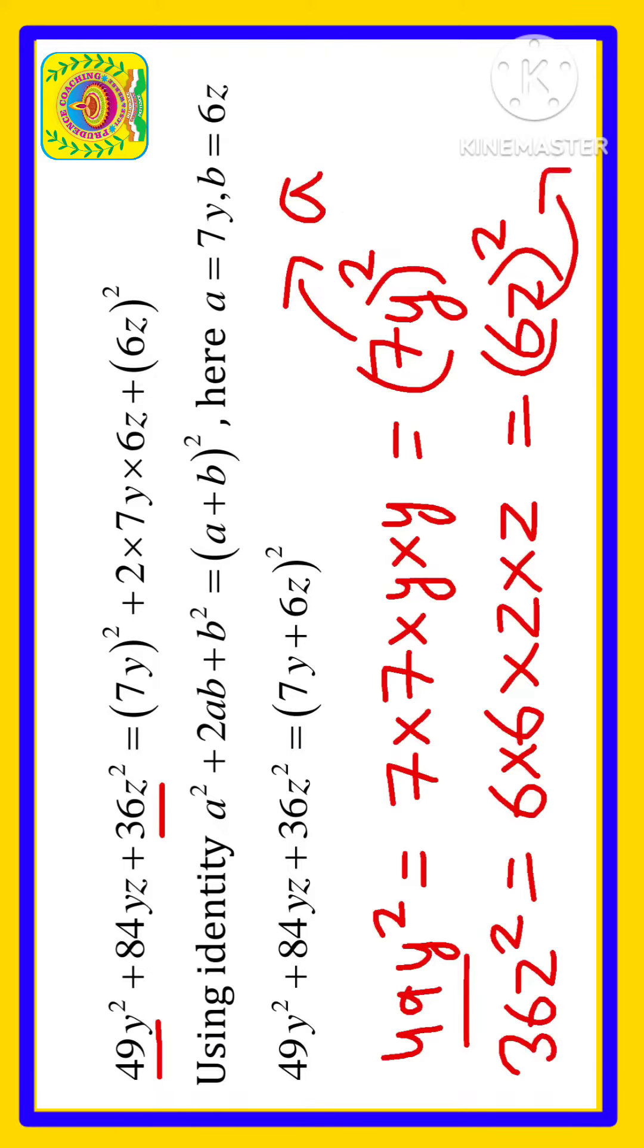So here a² where a is 7y and here b² where 6z is b.